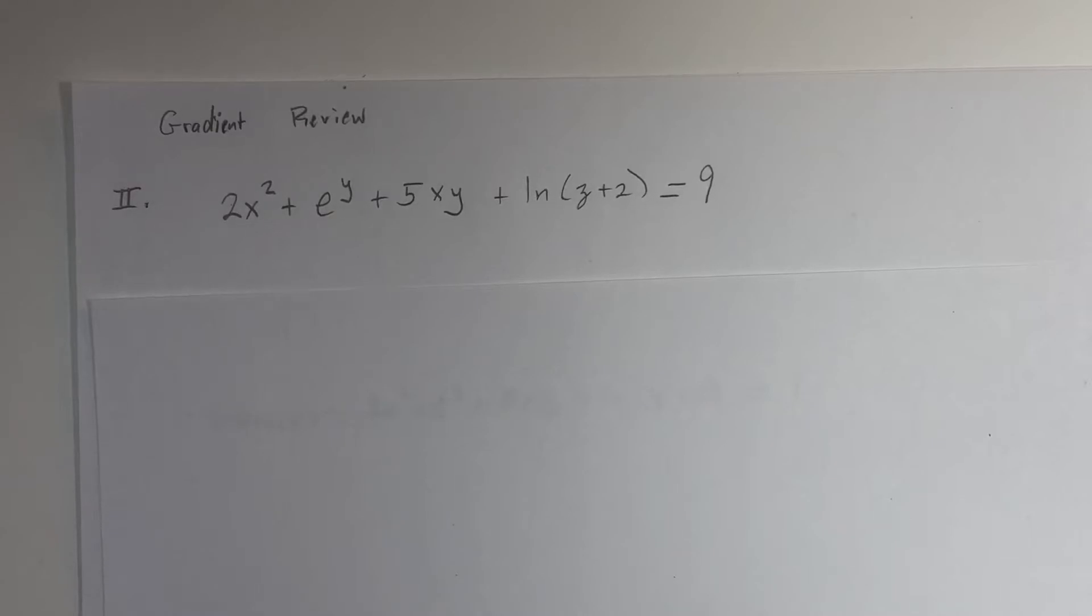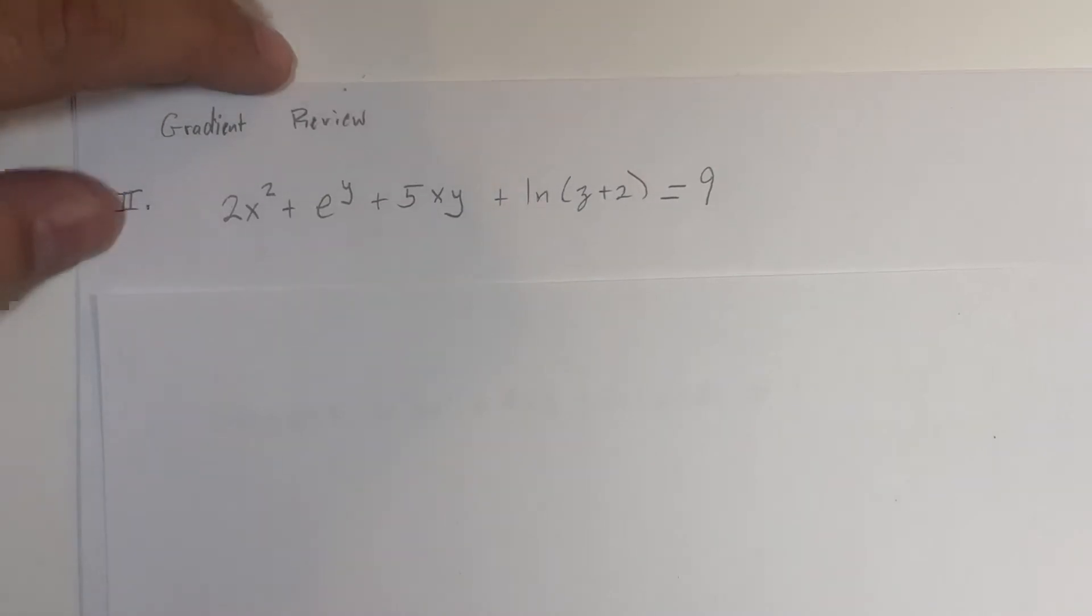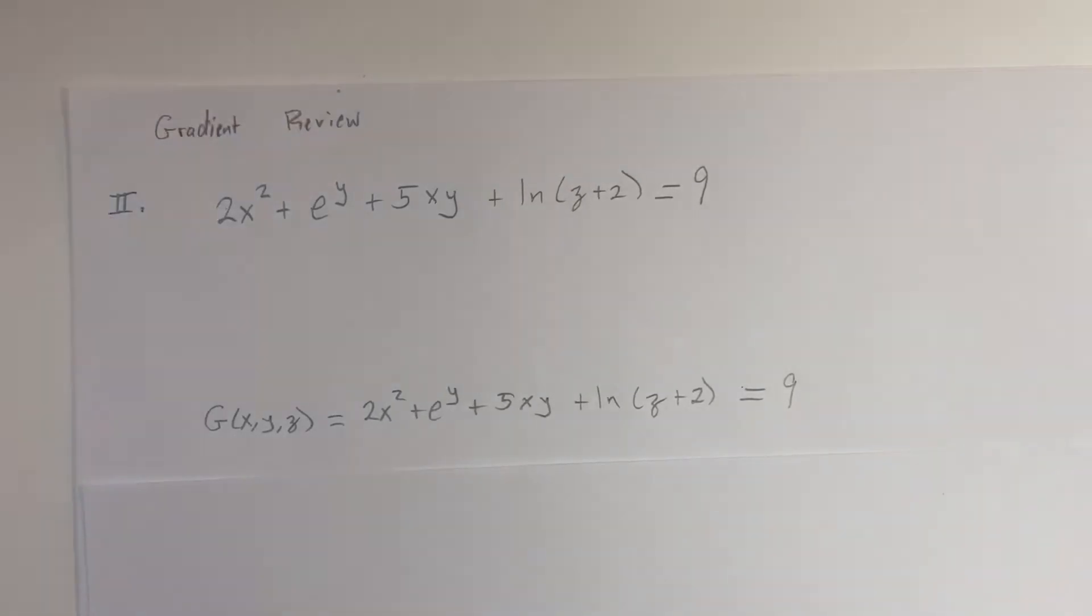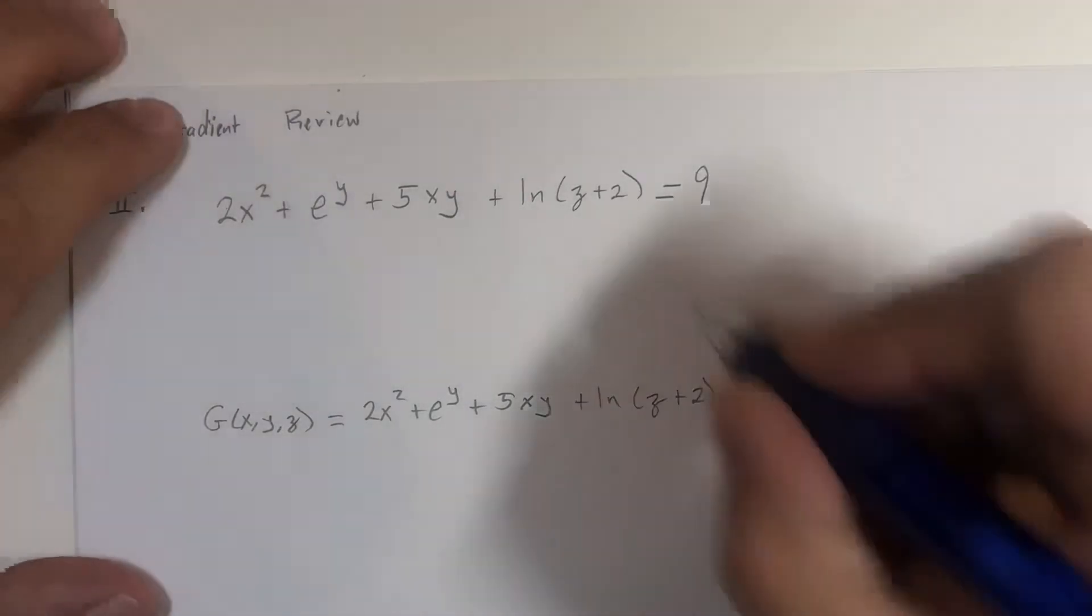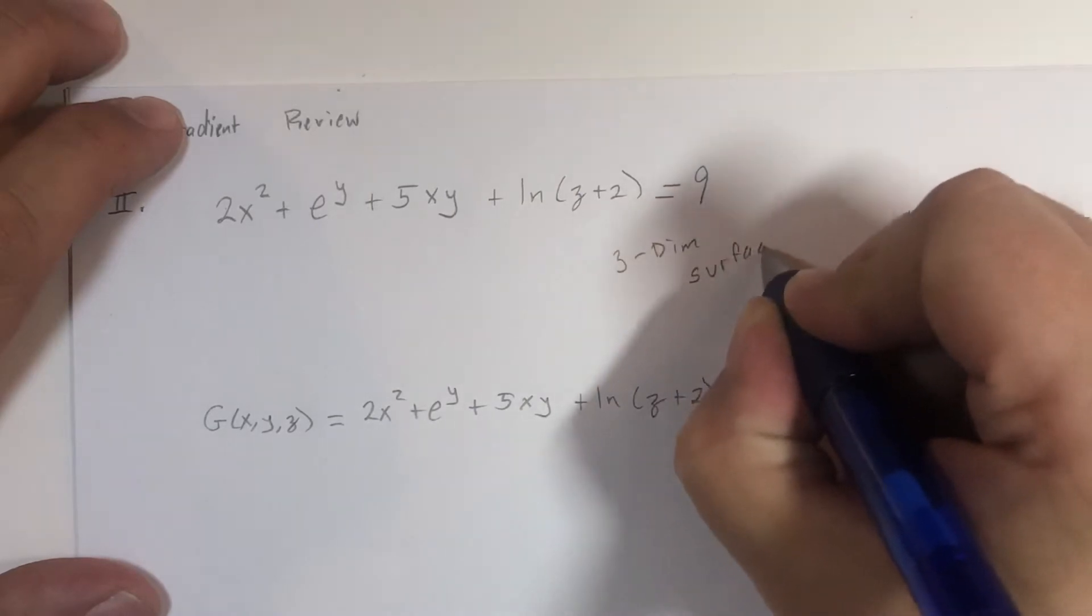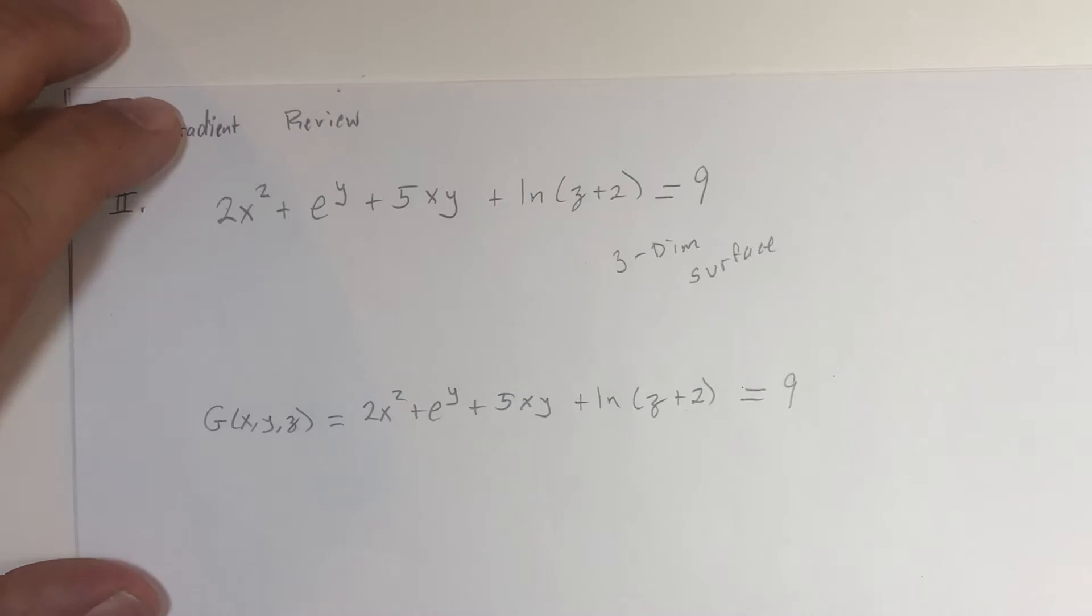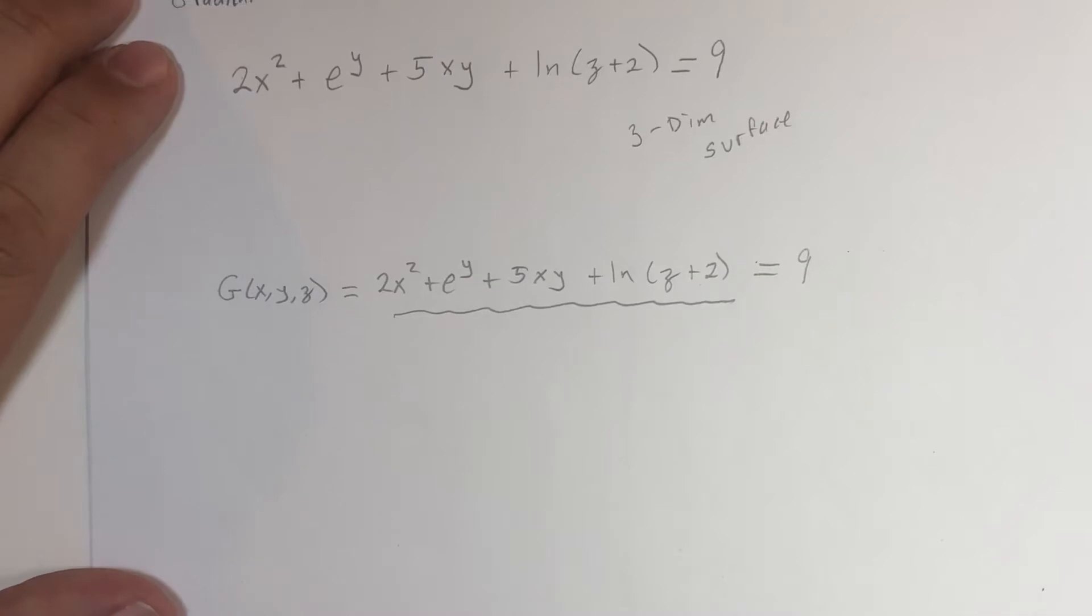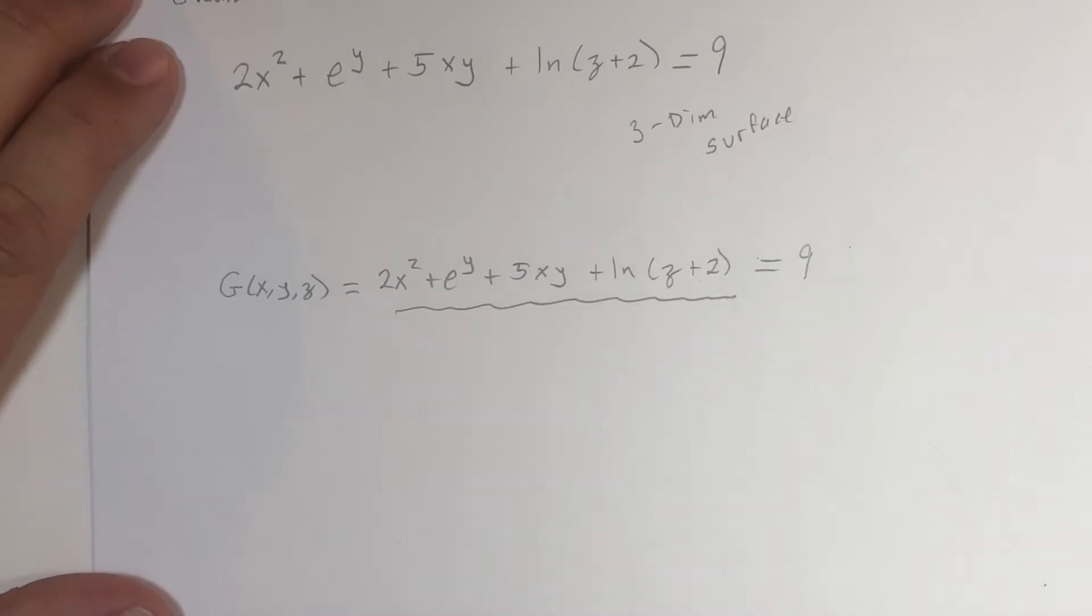We remember that if we were to write this with function notation this way, we could then look at our three-dimensional surface. This is a three-dimensional surface, but now we can view this in function notation, and this function has three variables.